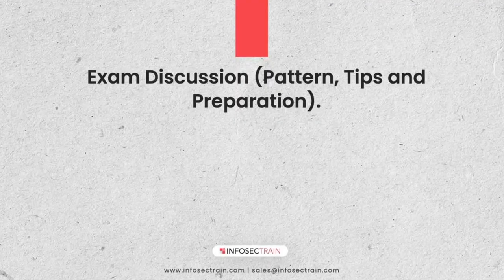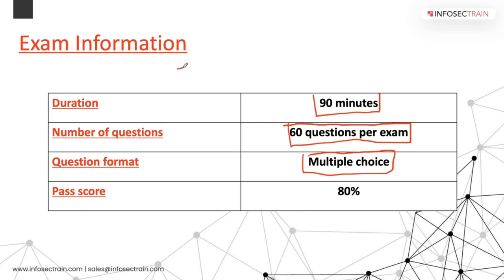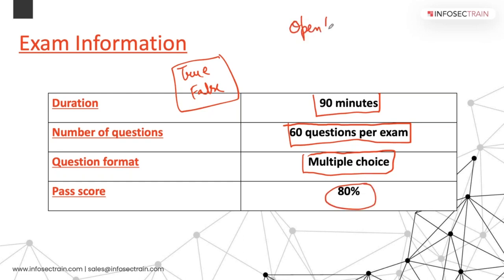Now regarding the exam pattern and tips: the duration for the exam is 90 minutes. You will get 60 questions per exam — all multiple choice, and some will be true/false. You have to score 80%, meaning 48 correct answers. One important thing about the exam: it is an open book exam, so you can have your notes and those documents open.